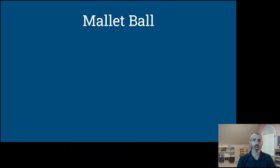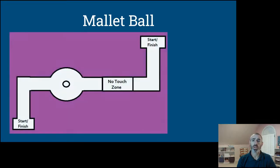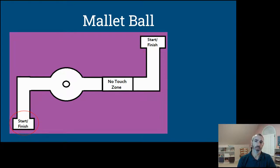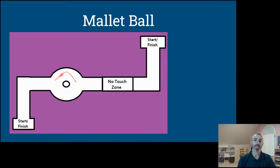In mallet ball, you're using the rubber mallet and only the rubber mallet to navigate this course, where you have a start-finish box at either end. You're going to start at the bottom left of the course, navigate upward on screen, then make a right-hand turn. Then you're going to navigate the course around a circular path one and a half times before you can exit.